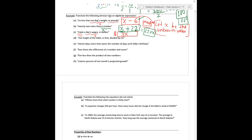The length of the table in feet — I'll call that x. Divided by 6. This one is phrased almost exactly as I would write it: x divided by 6. You could write it as a fraction with x in the numerator and 6 in the denominator, because the numerator divided by the denominator is the same thing. Or you could write it with the actual division symbol — both are perfectly correct.